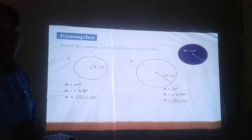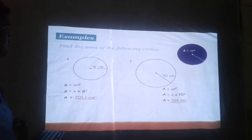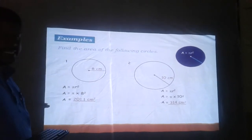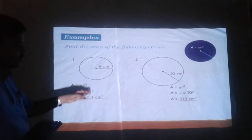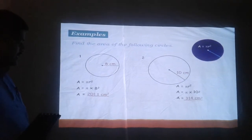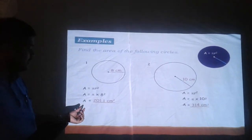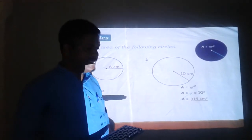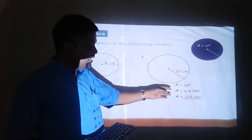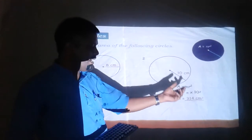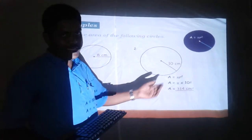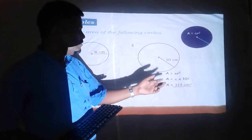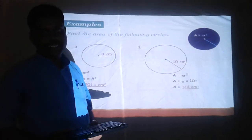Now, for revising the formula for area of circle, we have some examples. The first circle has radius 8 cm. Area of circle equals pi r squared. Pi into 8 squared — taking pi as 22/7 — the area comes to 201.1 cm squared. In the second figure, the radius of the circle is 10 cm. Area equals pi r squared. Taking pi as 3.14 into 10 squared, the answer comes to 314 cm squared.